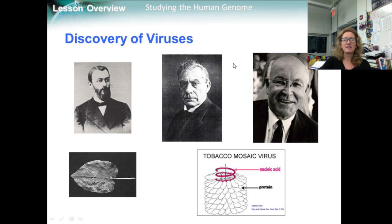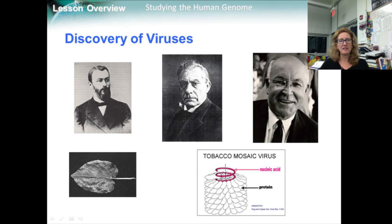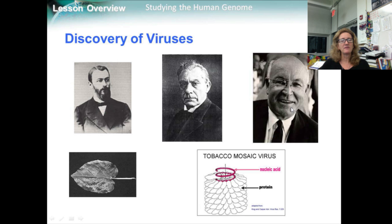In 1892, Dmitry Ivanovsky demonstrated that the cause of tobacco mosaic disease was found in the liquid extracted from infected plants. Then in 1897, Martinus Beijerinck suggested that tiny particles in the juice caused the disease, and he named these particles viruses after the Latin word for poison. And then in 1935, Wendell Stanley isolated crystals of tobacco mosaic viruses. Since we know that living organisms do not crystallize, Stanley inferred that the viruses were not alive.